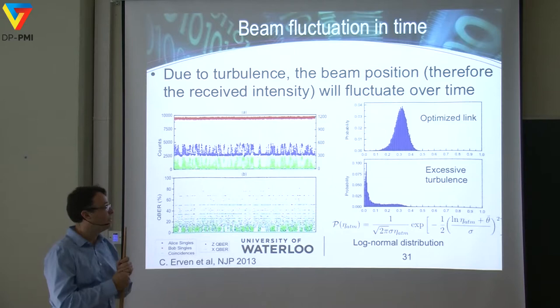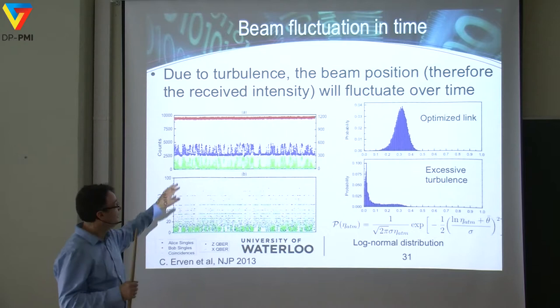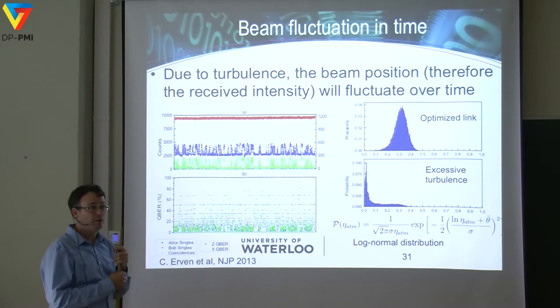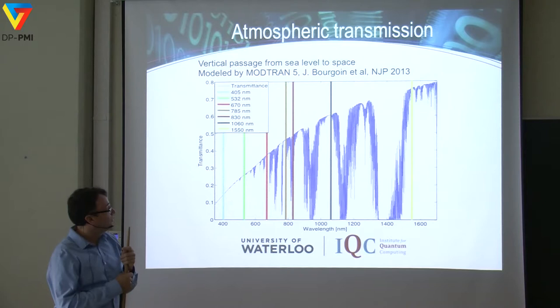This shows another problem with free space links: one link is never the same as another. Even the same link depends heavily on conditions — weather, wind, and other parameters. Luckily, photon-based quantum communication is okay with this, because these fluctuations can be dealt with.